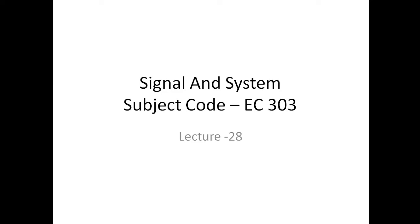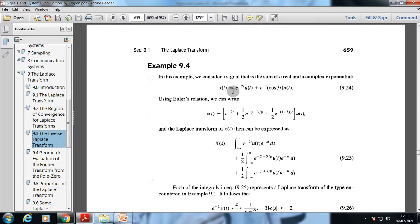We will understand the Laplace transform with a few examples, through which we will discuss the region of convergence and the geometric evaluation of Fourier transform using pole-zeros. We will also take a deep discussion about the differences between Laplace transform and Fourier transform — why we use it, what is the range where Fourier transform is applicable, and where the Laplace transform comes into picture.